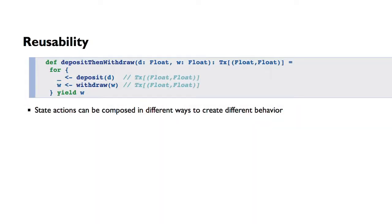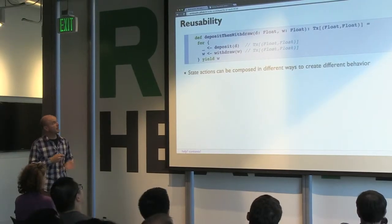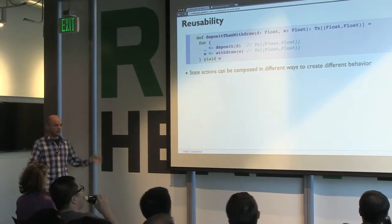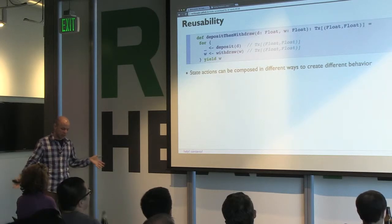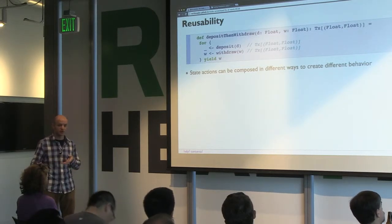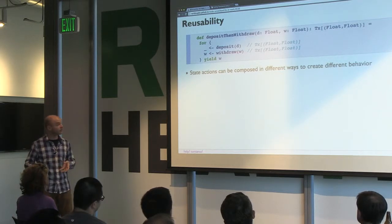And then reusability, which is basically the same as composition in this case. We can take deposit and withdraw, which we wrote in the previous slide, and put them together. We can build up a big library of all these different state actions and combine them in different ways for different use cases, and it all fits together very nicely.